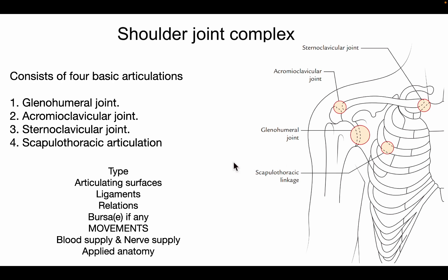In the glenohumeral joint, we will cover the type, articulating surface, ligaments, relations, bursa, movements, blood supply, nerve supply, and the applied anatomy of the shoulder joint.